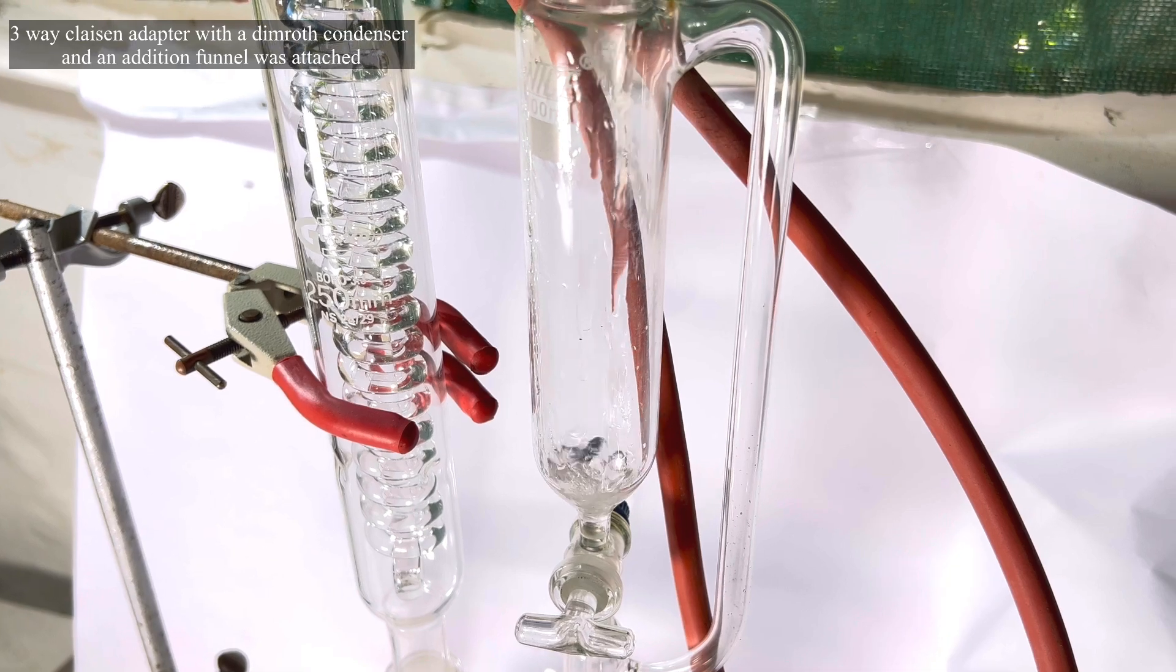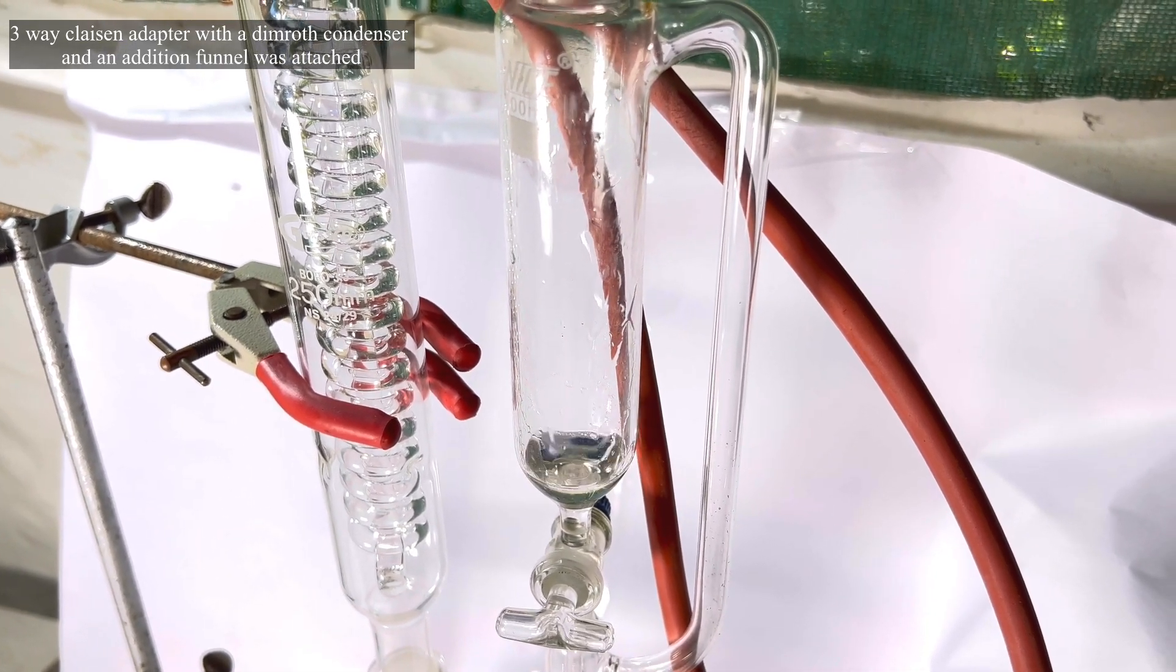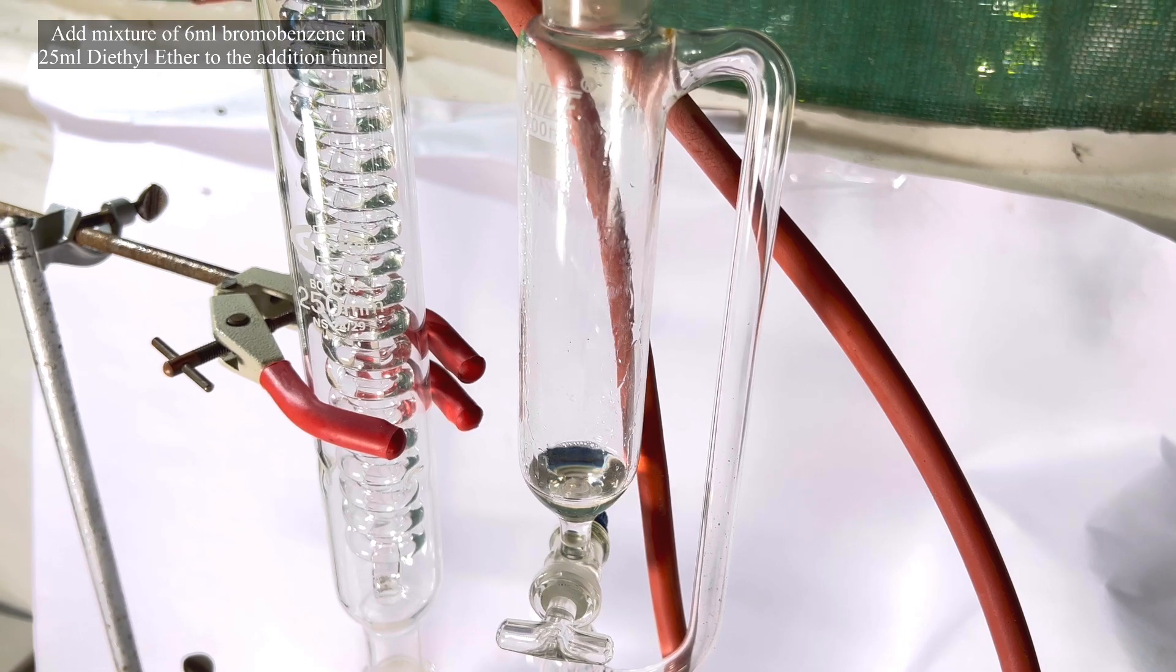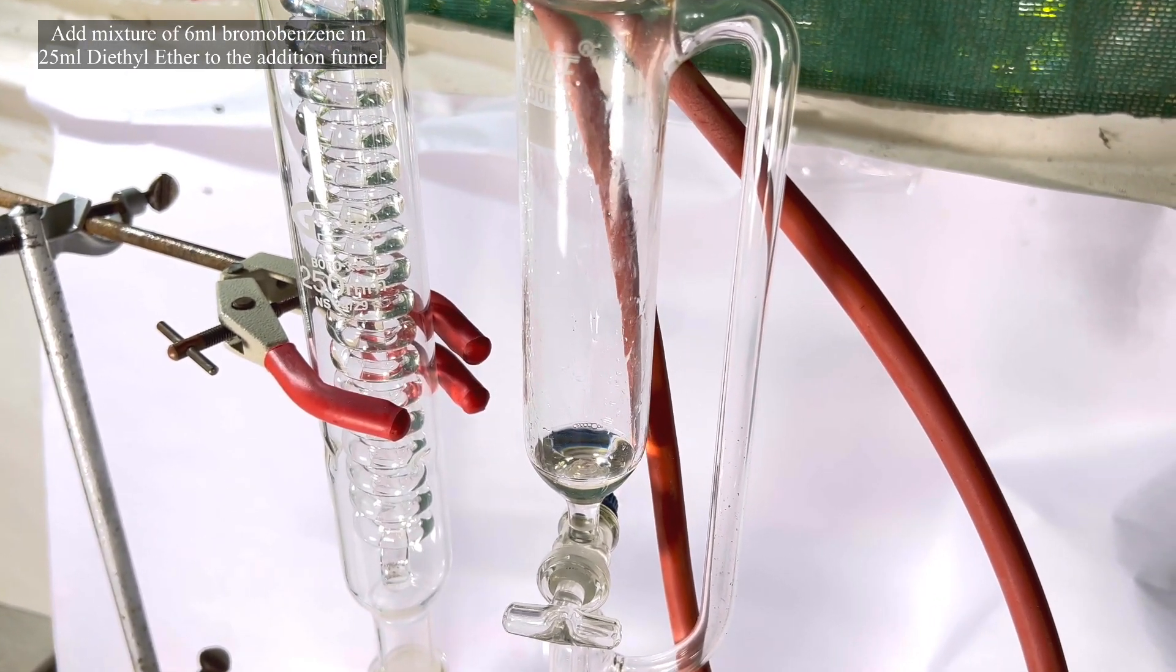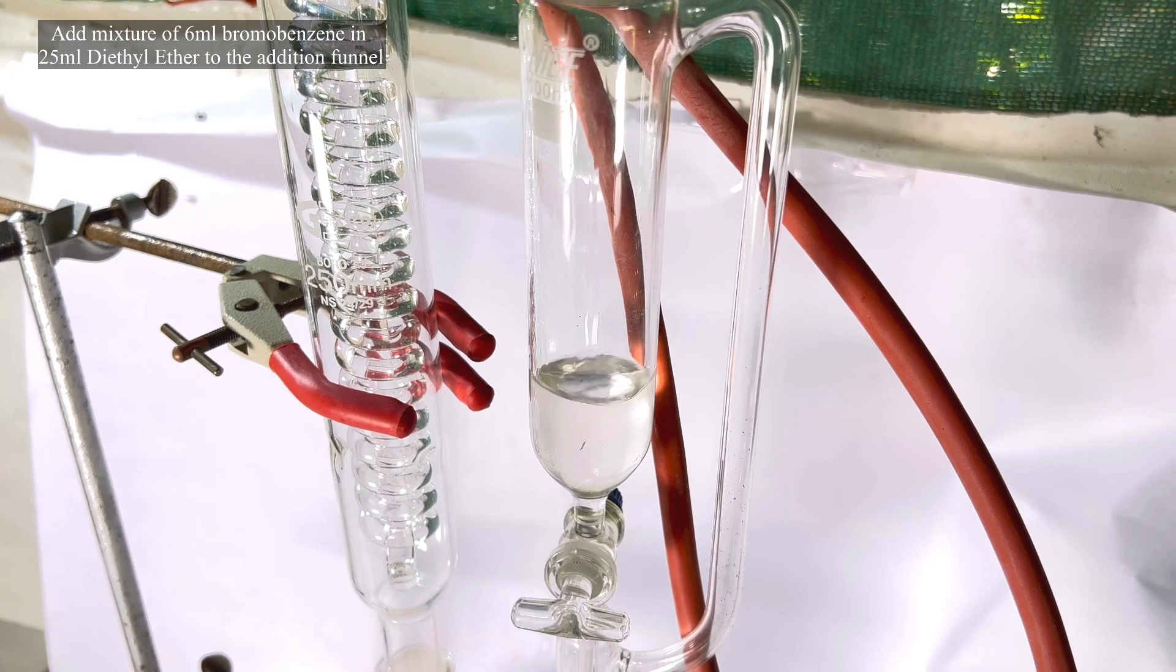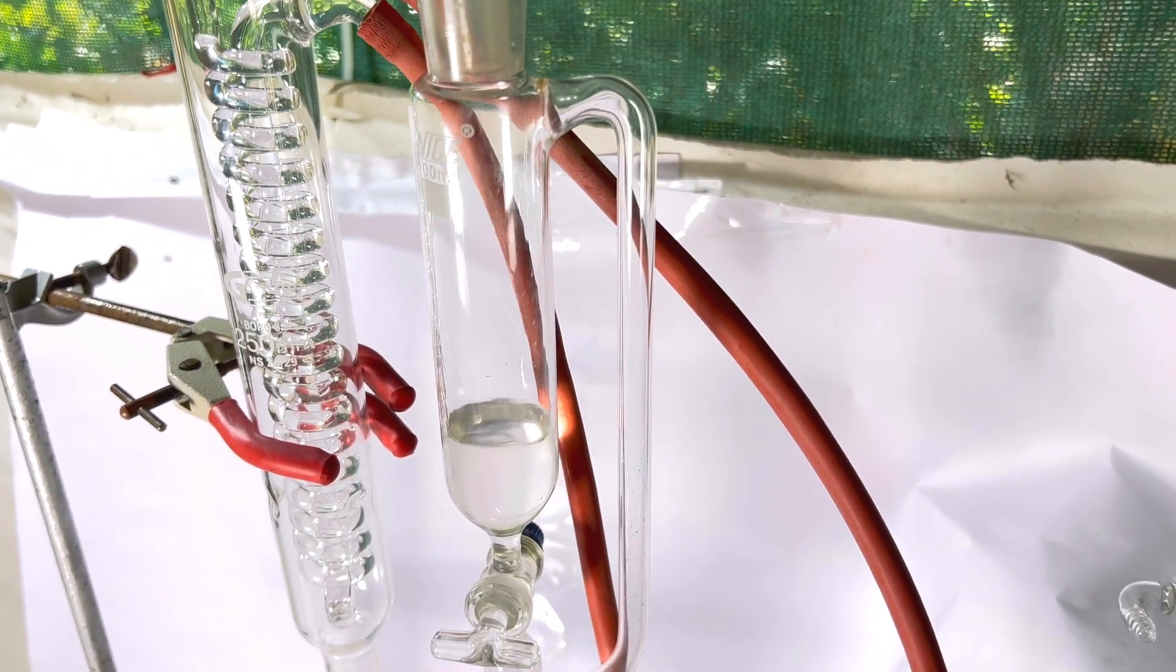In one of the ends a Dimroth condenser was attached and on the other side a pressure equalizing addition funnel was attached. Now a mixture of 6 ml of dry bromobenzene in 25 ml anhydrous diethyl ether was added to the addition funnel. Always make sure the stopcock is closed before adding the solution.